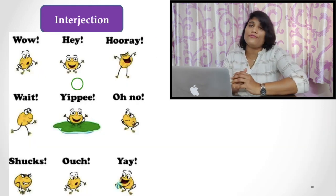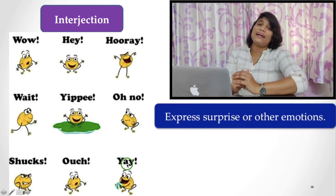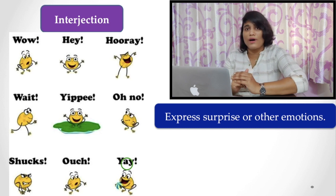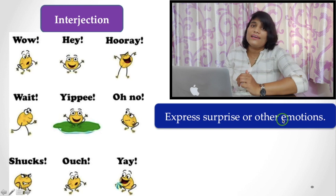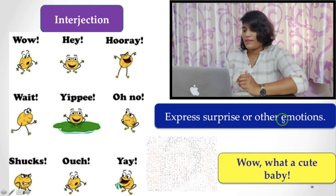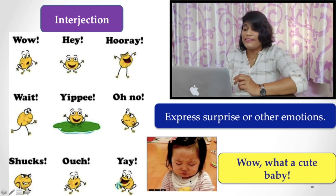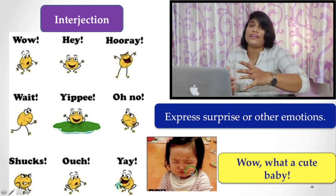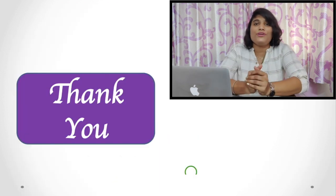Now interjection. What are the interjections? Wow, hey, hooray, yet, if, oh no, stuck, ouch, yeah. These are called interjections. Why? Because they express surprise or other emotions. Let's see the examples here. Wow, what a cute baby. Here you express your emotion after seeing the baby. So how do you like this?